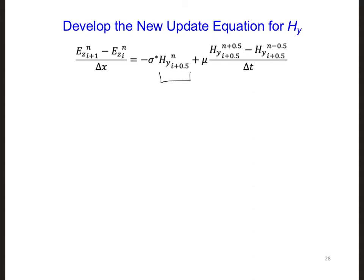So again, we're going to use the semi-implicit approximation, Hy n i plus 0.5 is about equal to Hy i plus 0.5 n plus 0.5 plus Hy i plus 0.5 n minus 0.5 over 2.